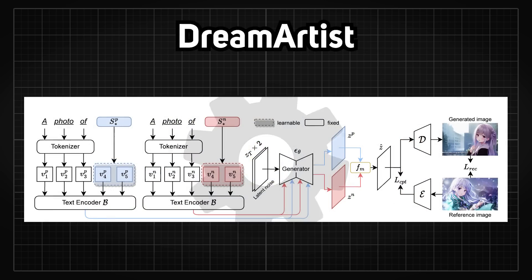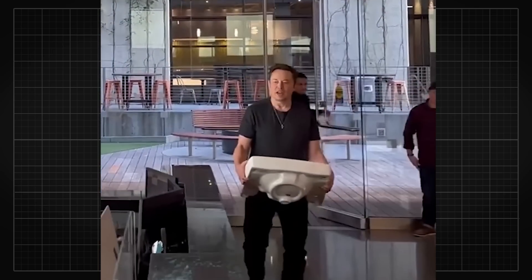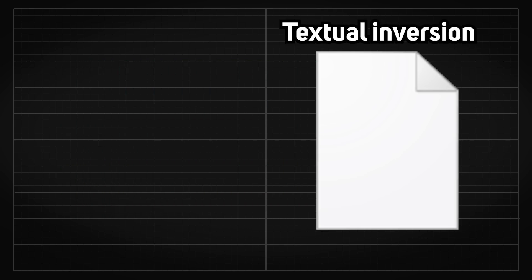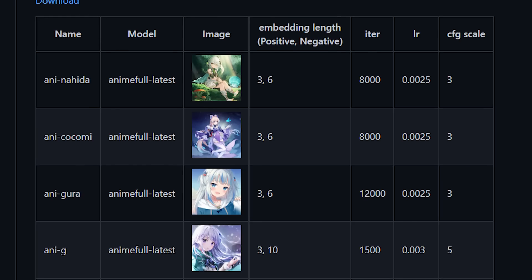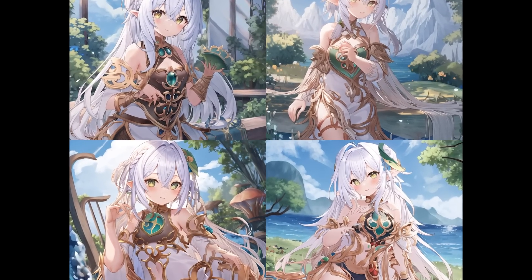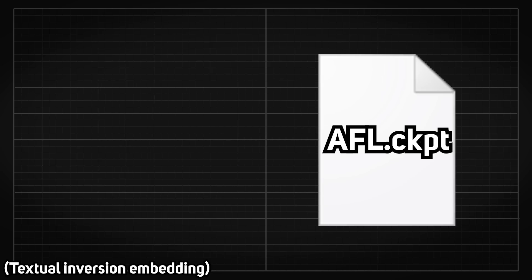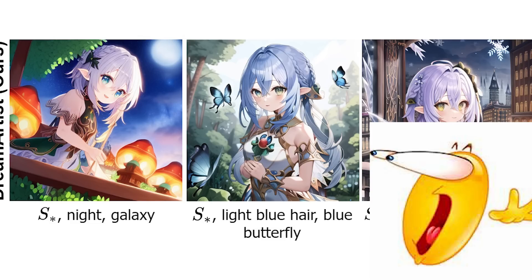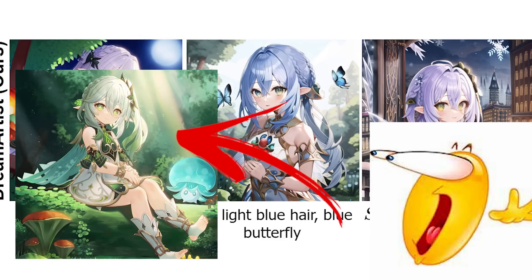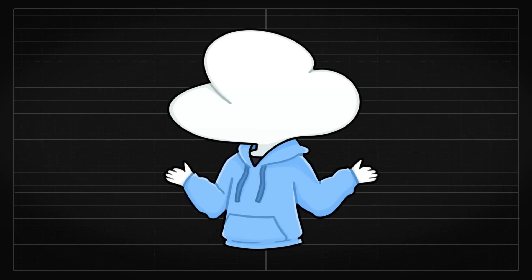After two months after DreamBooth was proposed, Dream Artist came out of nowhere. By proposing a modified textual inversion network, it once again stretched the limit of what AI can do. Let that sink in — only one image is needed for textual inversion. Absolutely bonkers. The results the author showed were incredibly impressive; my mind was blown when I was able to reproduce the same result using the model the author shared on their GitHub. Just look at these — they do not look like something you should be able to achieve using only a single reference image.